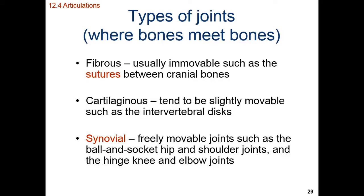You can categorize joints into three broad categories. We have our fibrous, our cartilaginous, and our synovial joints. All of these joints are bone meets bone, and there's typically going to be some kind of a special interface between this bone-bone connection.